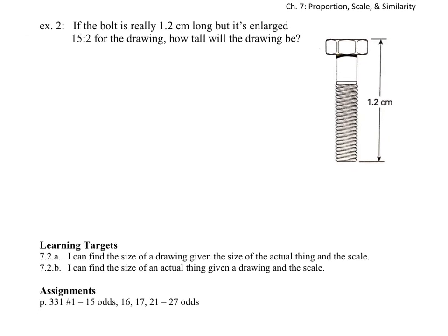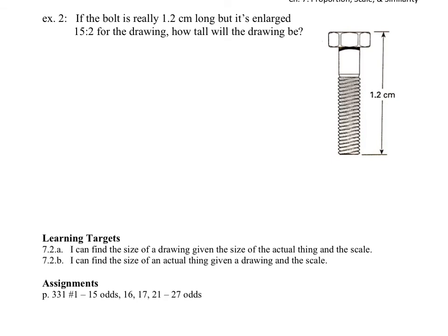So example two. If the bolt is really 1.2 centimeters long, but it's enlarged 15:2 for the drawing, how tall will the drawing be? Okay, so we want to do a fraction equals a fraction. The 1.2, do we put that in the top or the bottom? Well, if we go back to scale, we said the equation for scale was what over what? We did new over original. Or before we kind of did like the map over real life. So when we have this 15 colon 2, we could take and put that in first, right? That's a good first step is take your scale and slap it in there. So the new is 15 for every 2 on the original.